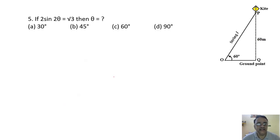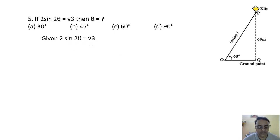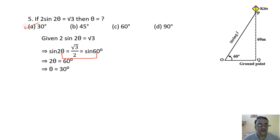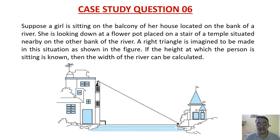Question 5: 2sin 2θ = √3, find θ. So sin 2θ = √3/2, which is sin 60°. Therefore 2θ = 60°, giving θ = 30 degrees. The correct option is option D.